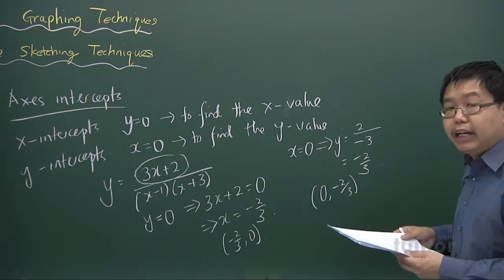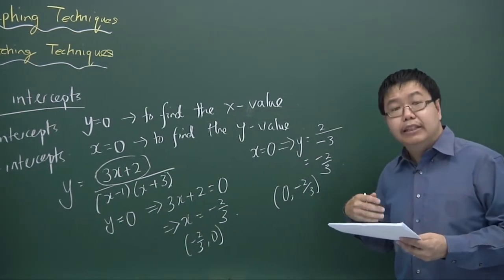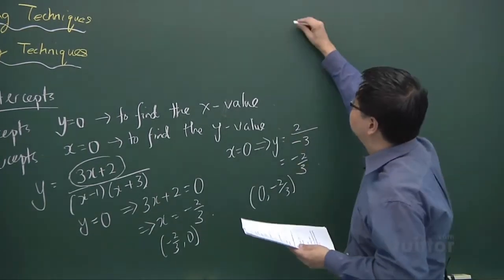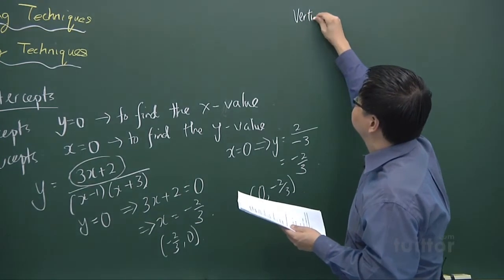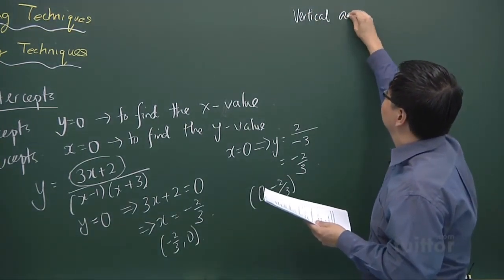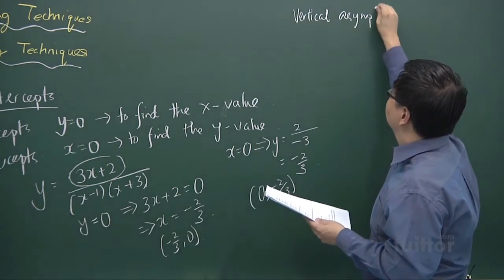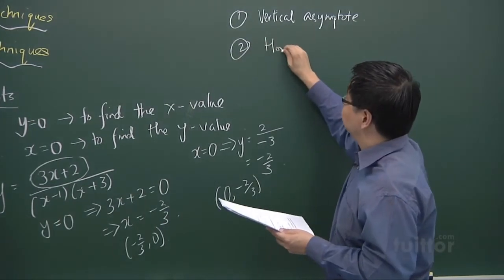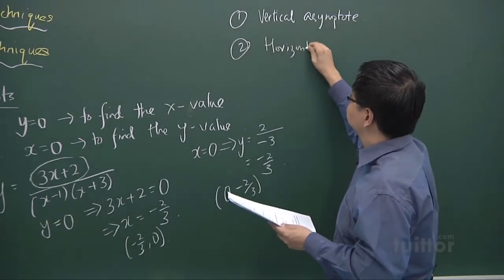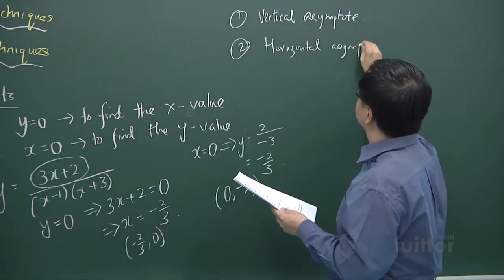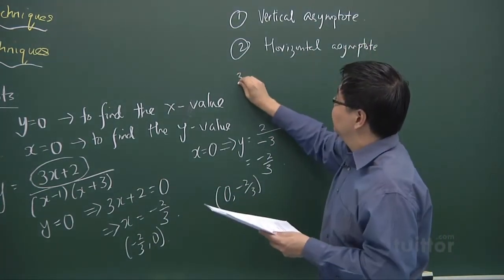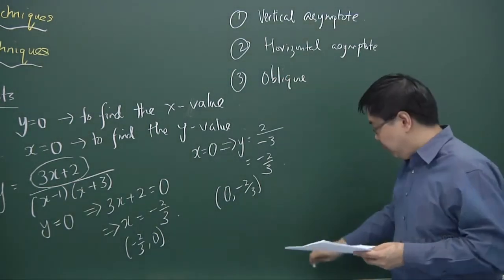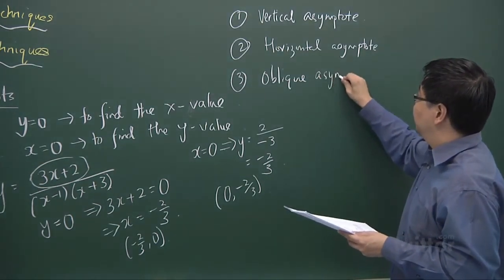The second characteristic of a curve that you're expected to know is the asymptotes. Generally, there are three types of asymptotes: the vertical asymptote, the horizontal asymptote, and the oblique asymptote. These are the three asymptotes you're expected to know how to identify in any curve.